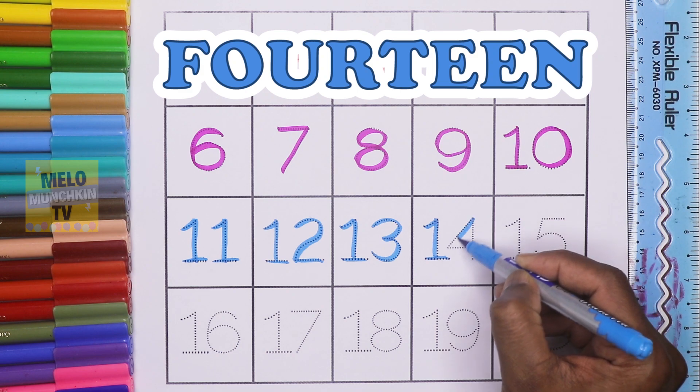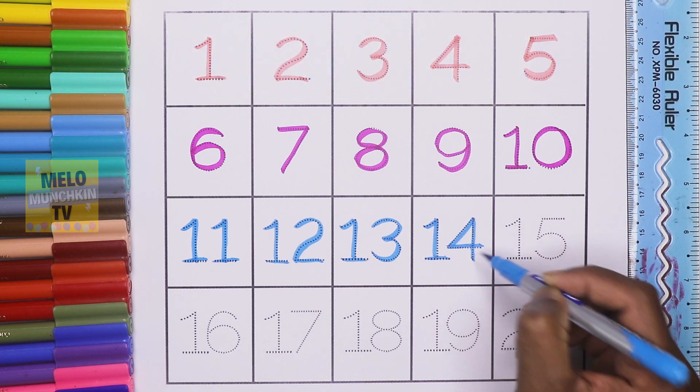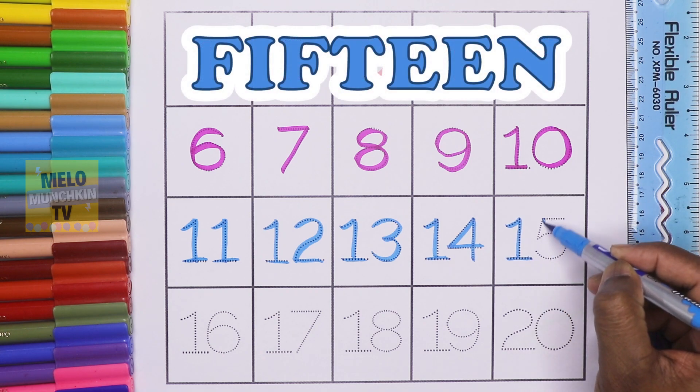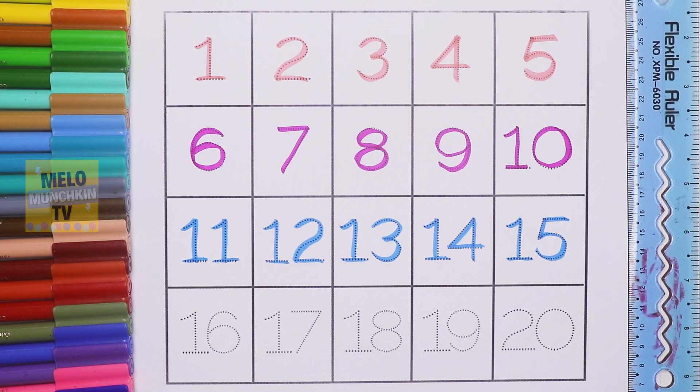This is number fourteen, F-O-U-R-T-E-E-N, 14. This is number fifteen, F-I-F-T-E-E-N, 15. Next, I'll take purple color to write the last line.